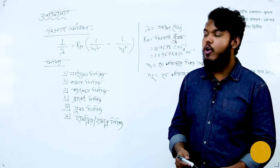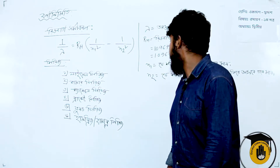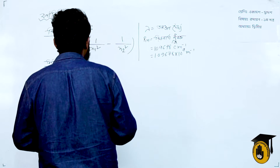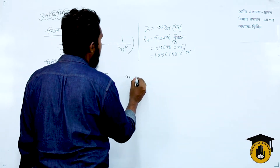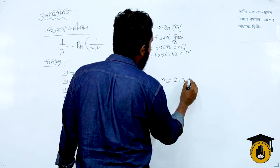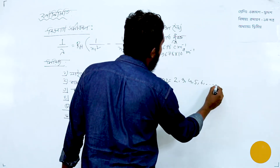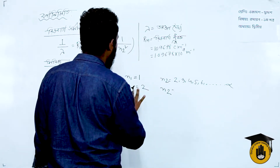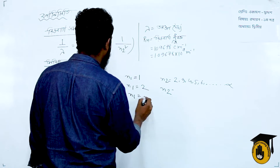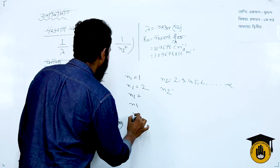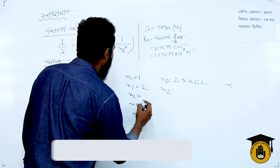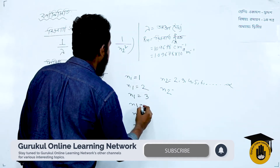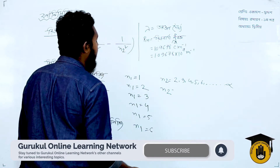The name of each series and its corresponding n1 value: Lyman series n1 = 1, Balmer series n1 = 2, Paschen series n1 = 3, Brackett series n1 = 4, Pfund series n1 = 5, Humphreys series n1 = 6.